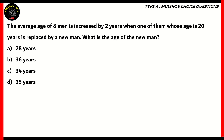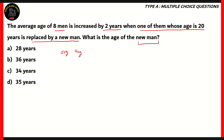Now let's look at the final question for the day. The average age of eight men is increased by two years when one of them, whose age is 20, is replaced by a new man. You need to find the age of the new man. At first glance it seems like there's very little the question offers us in order to solve it. However, if you look at it critically, you'll find that these bits of information are enough to solve it. We'll have to use variables in order to denote the average ages. Let the original average age be x, and the new average age after the replacement be x plus 2, because the average age is increased by two years.